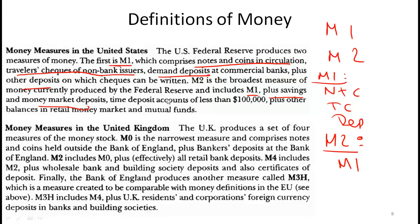M2 is a broader measure — in the US context, it's the broadest measure. It includes M1 plus savings and money market deposits, time deposits of accounts less than $100,000, and other balances in retail money market mutual funds. The key point is that M2 captures money in relatively liquid form — for example, money in a mutual fund that you can access within a day.